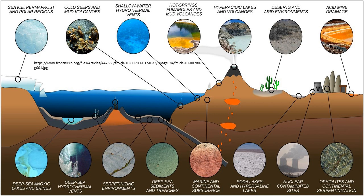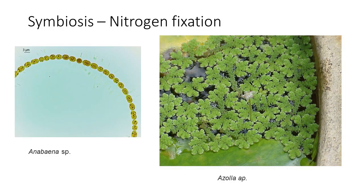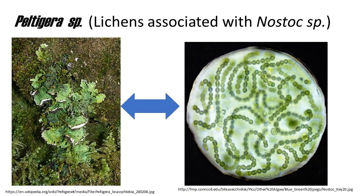Cyanobacteria are evolutionarily optimized for environmental conditions of low oxygen. Some species are nitrogen-fixing in nature and live in a wide variety of moist soils and water, either freely or in a symbiotic relationship with plants or lichen-forming fungi. They range from unicellular to filamentous and include even colonial species.